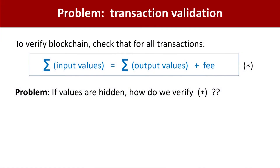But now you run into an immediate problem: how do you verify that the transactions are valid? Transactions have a fundamental property they must satisfy — the sum of the input amounts has to equal the sum of the output amounts. If you can't verify that equation holds, either money is disappearing from the system or being created out of thin air. So if you write commitment data to the blockchain, how do you verify the blockchain still has integrity? We've hidden the values and as a result can no longer verify that transactions are valid. Either we make values public and anyone can verify, or we make values hidden and no one can verify.